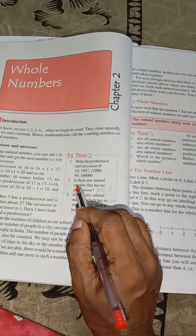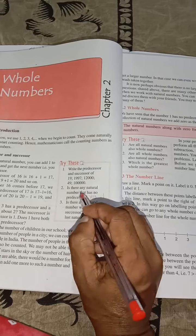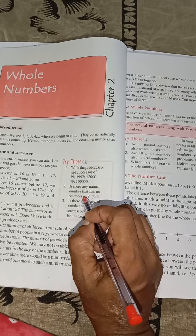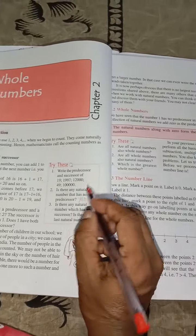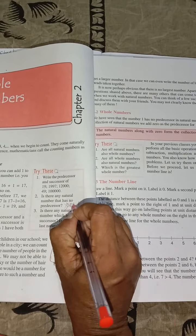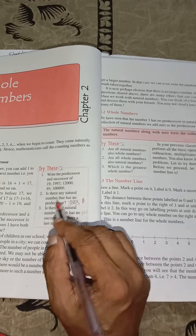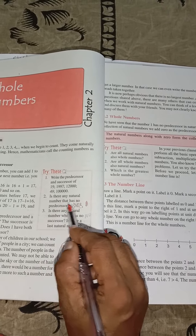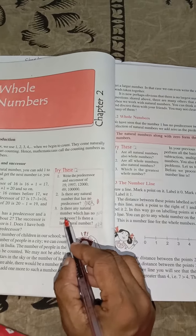Come to question number 2. Is there any natural number that has no predecessor? Yes. Which number is not having predecessor? Which natural number? It is 1. So is there any natural number that has no predecessor? Yes, 1.